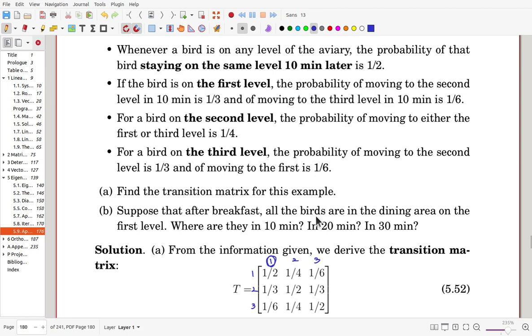So in the beginning, the distribution is 1, 0, 0. And during the breakfast, all the birds are on the level 1, so that probability is 1, on the level 1, for other levels is 0.